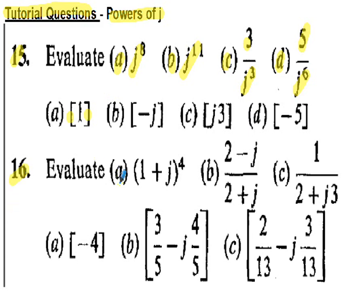Question 16: evaluate part a, 1 plus j to the power of 4. Expand 1 plus j times 1 plus j, simplify, then square that result. Part b: simplify 2 minus j divided by 2 plus j using the complex conjugate 2 minus j — expand and simplify. Part c: 1 over (2 plus j) cubed — multiply top and bottom by the complex conjugate and simplify. Answers are shown in square brackets.